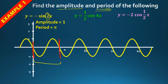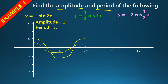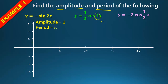Now let's look at a cosine curve with y = ½cos(4x). There's no negative sign so it won't be flipped. The ½ in front shrinks the amplitude. The period is 2π divided by 4, which reduces to π/2, so it completes one period in π/2.